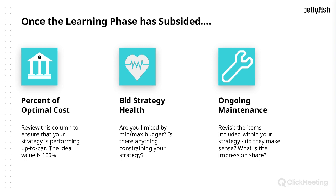As you're evaluating, are the associations accurate? Once they're in place and the learning phase has gone through, does the forecasting tool say your target is attainable? Does it think it could do better? Does it think it's too high? It's going to give you those different evaluations and let you really consider your options.